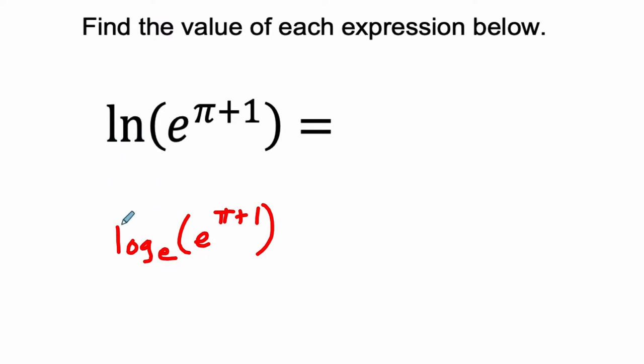So this ln refers to a natural log, which is a log with a base of e. And what this is saying is that the base e raised to some power, we'll call it x, equals e to the power of pi plus 1. And that just means we're actually looking at this.